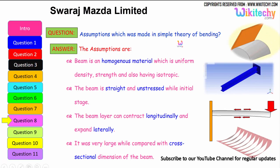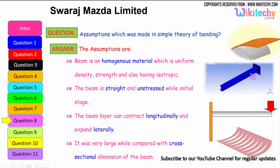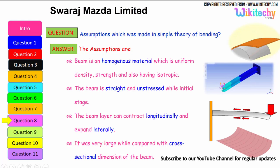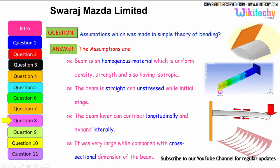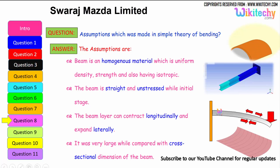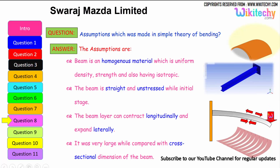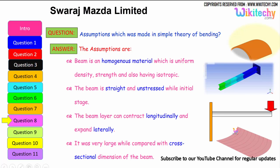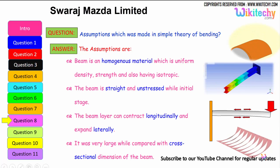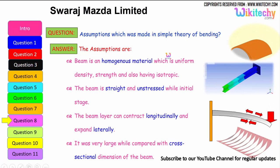What are the assumptions made in the simple theory of bending? The assumptions are: the beam is made of homogeneous material with uniform density, strength, and isotropic properties. The beam is straight and unstressed in its initial stage. The beam can contract longitudinally and expand laterally. The span of the beam is very large when compared with its cross-sectional dimensions.